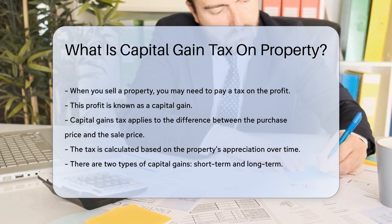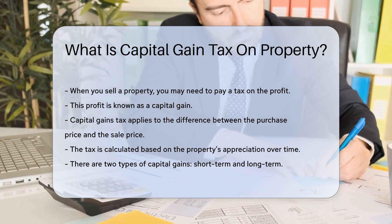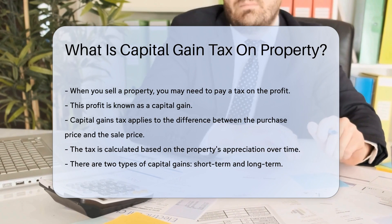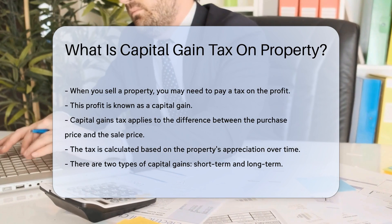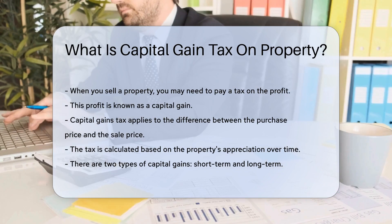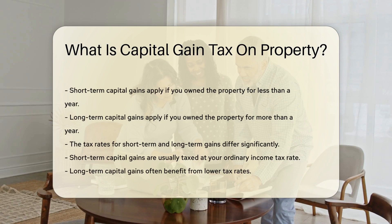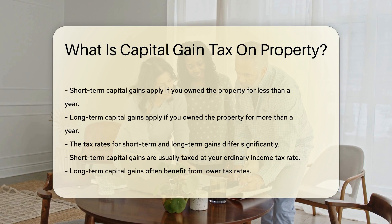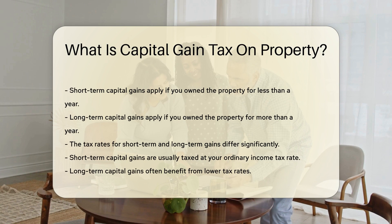The tax is calculated based on the property's appreciation over time. There are two types of capital gains: short-term and long-term. Short-term capital gains apply if you own the property for less than a year. Long-term capital gains apply if you own the property for more than a year.